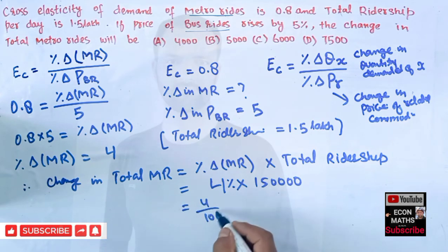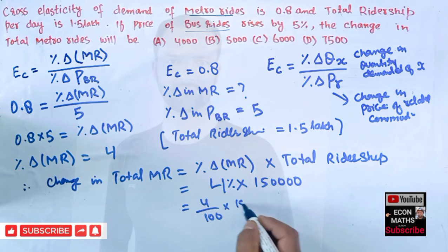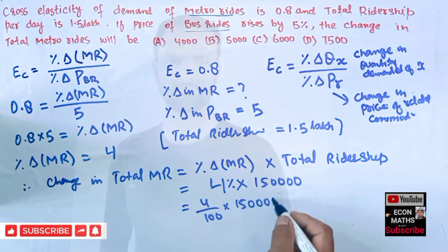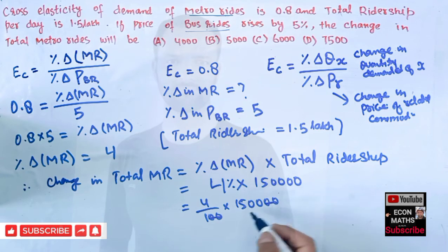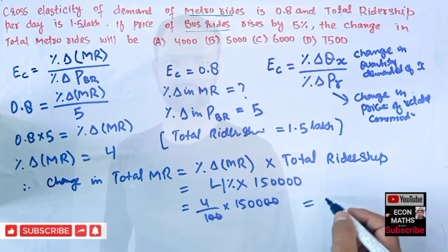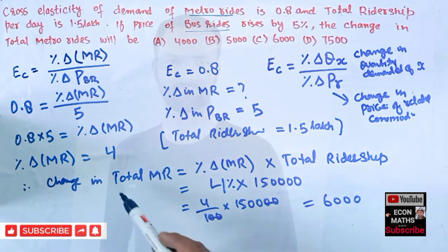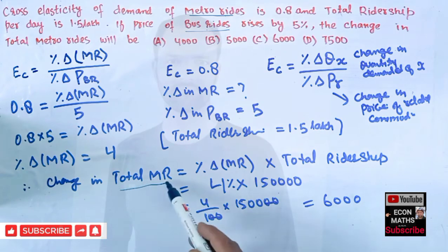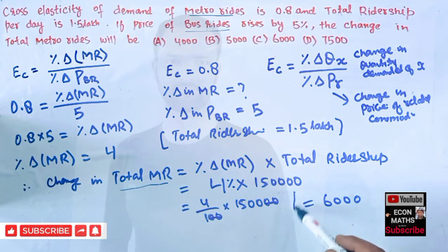Calculating: 4/100 into 1,50,000 gives us 1500 into 4, which equals 6000. Therefore, the change in total metro riders will be equal to 6000.